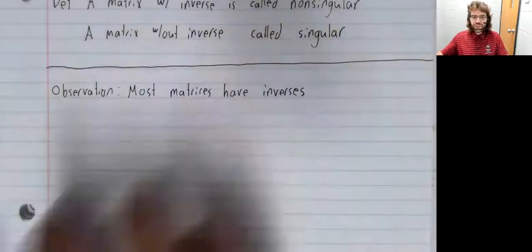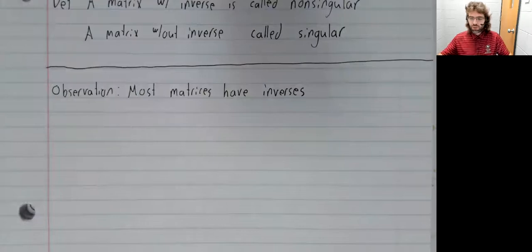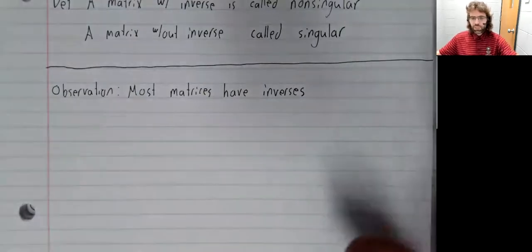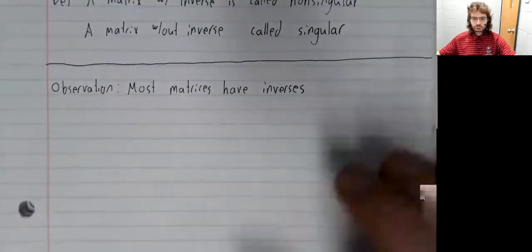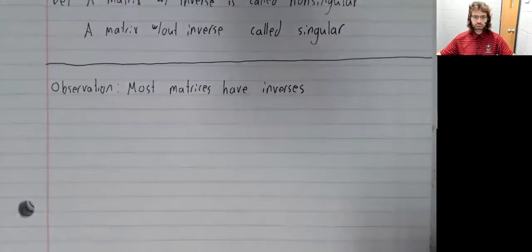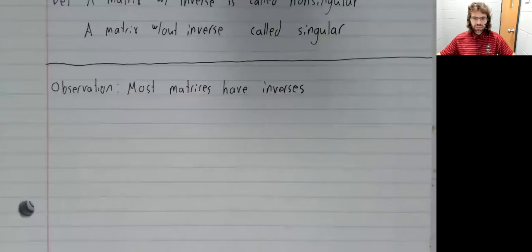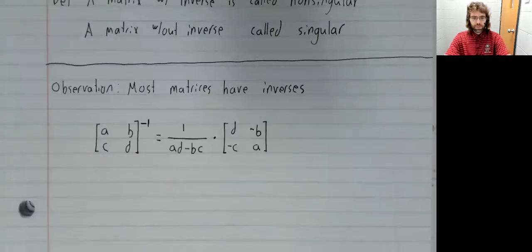Maybe we can flesh out this observation a little by putting a formula onto the document camera. You don't have to memorize this. But here's a formula for the inverse of a two by two matrix.